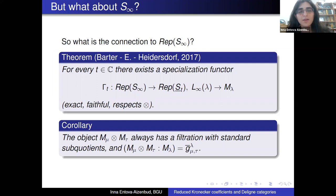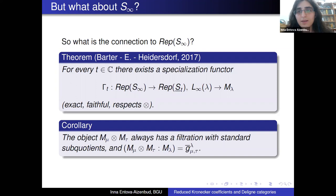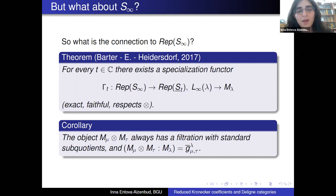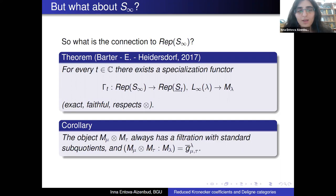For every complex number T, there is a specialization functor from the category of representations of S_infinity to the Deligne category, which takes simples to standards and injectives to tiltings. This functor is exact, faithful, and respects tensor products — really the best thing you can get. An immediate corollary is that if you take two standard objects M(mu) and M(tau), their tensor product has a filtration with standard subquotients, and the multiplicities in this filtration are precisely the reduced Kronecker coefficients.